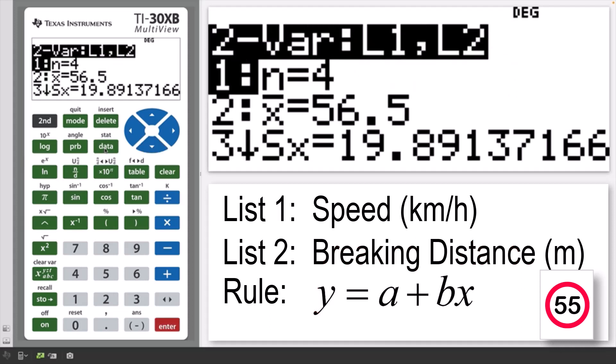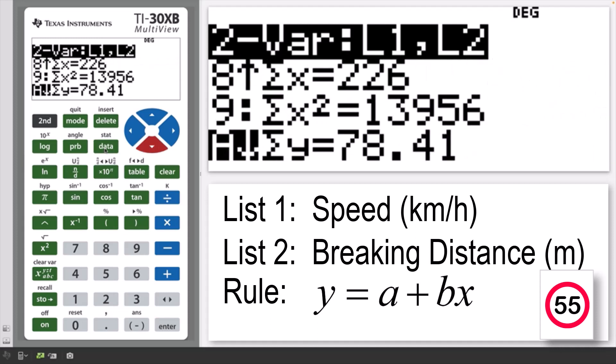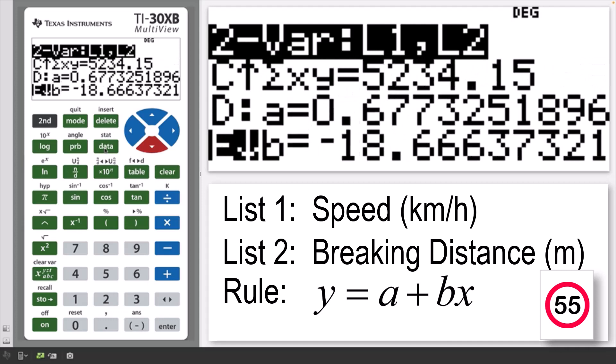This will display the two variable statistics. Scroll down to view the line of best fit values for a and b, where this line has equation y equals a plus bx.